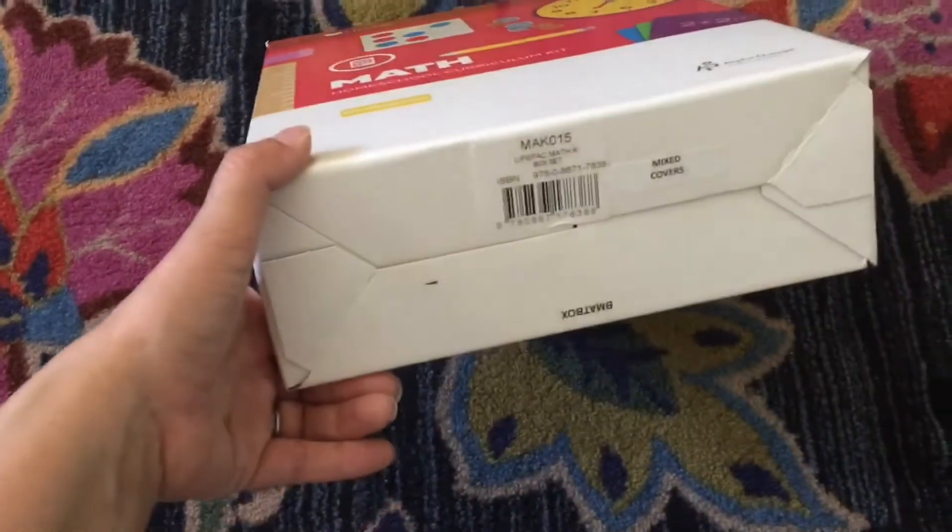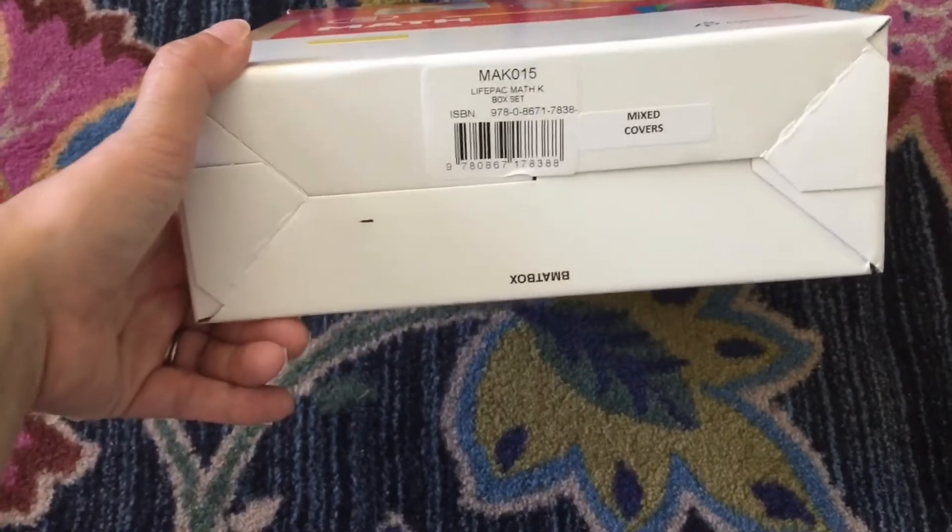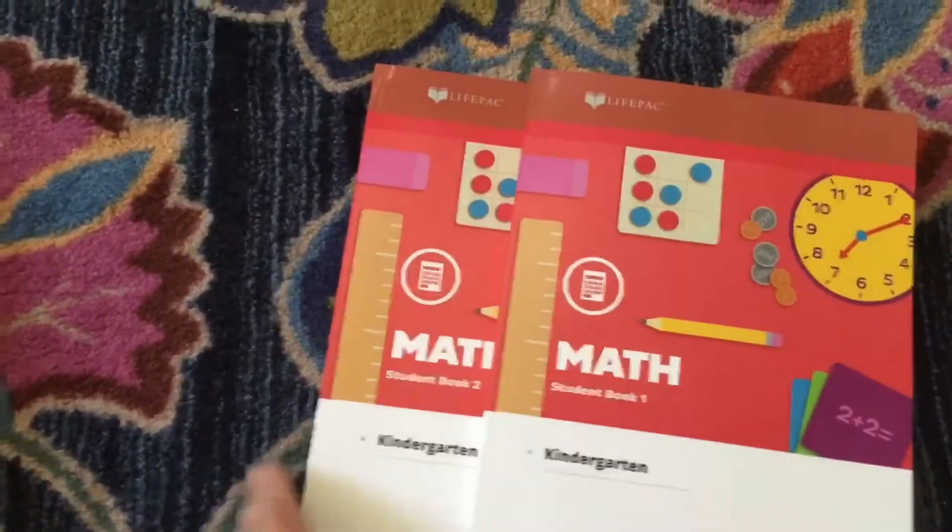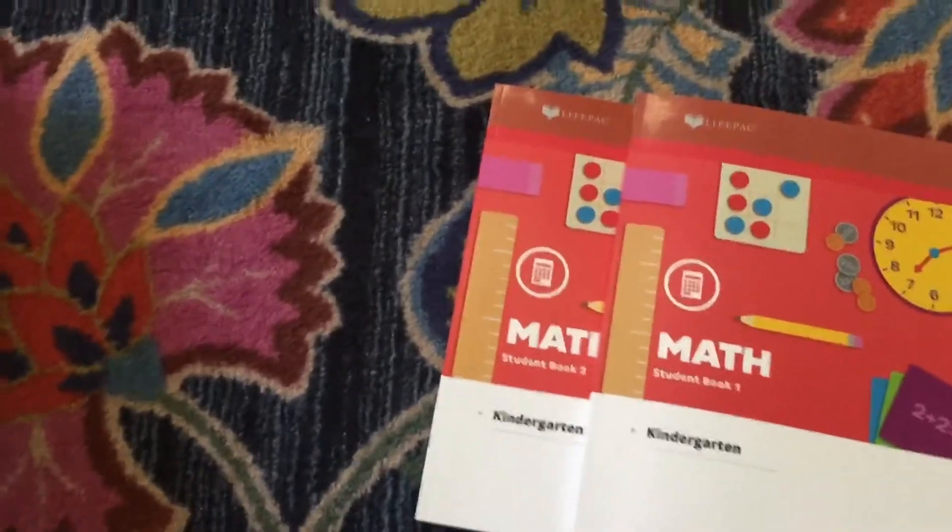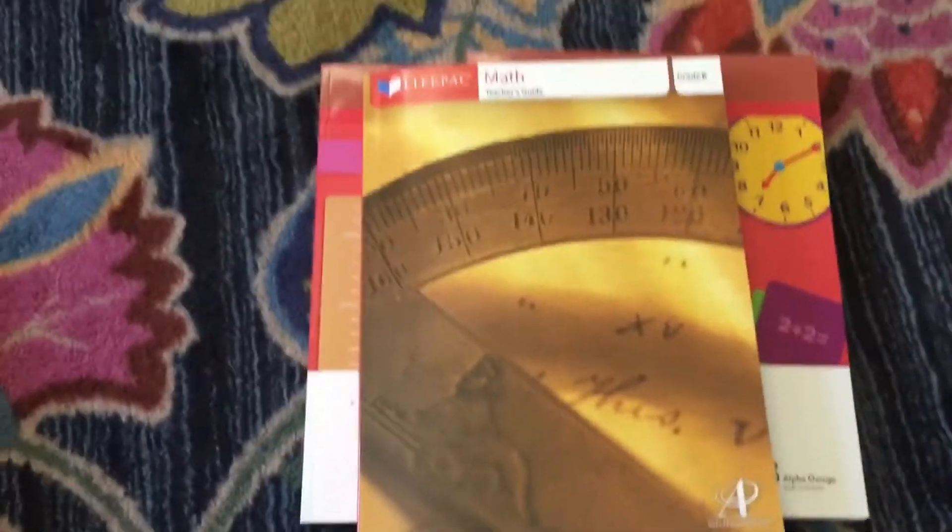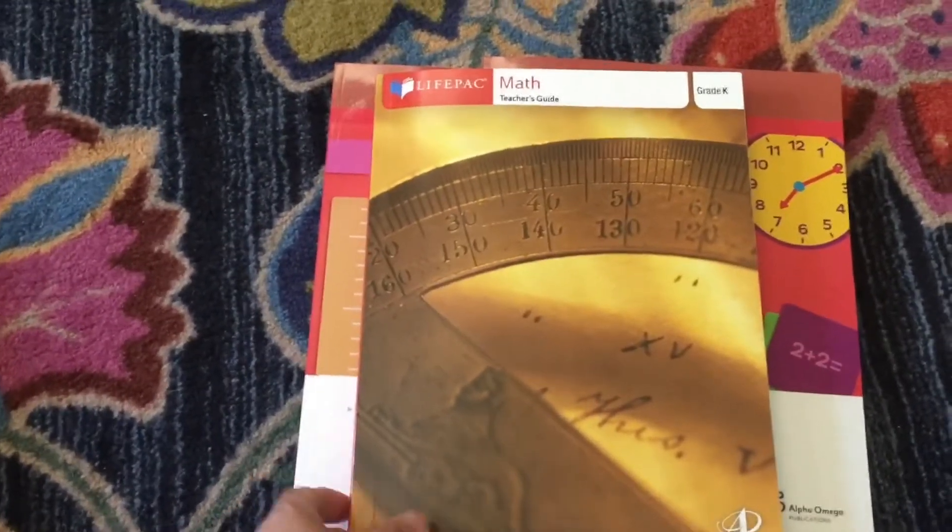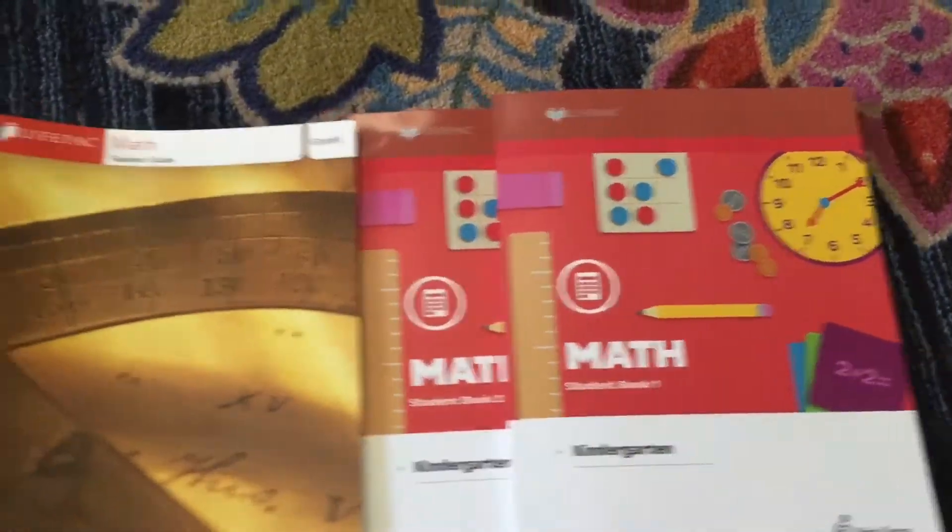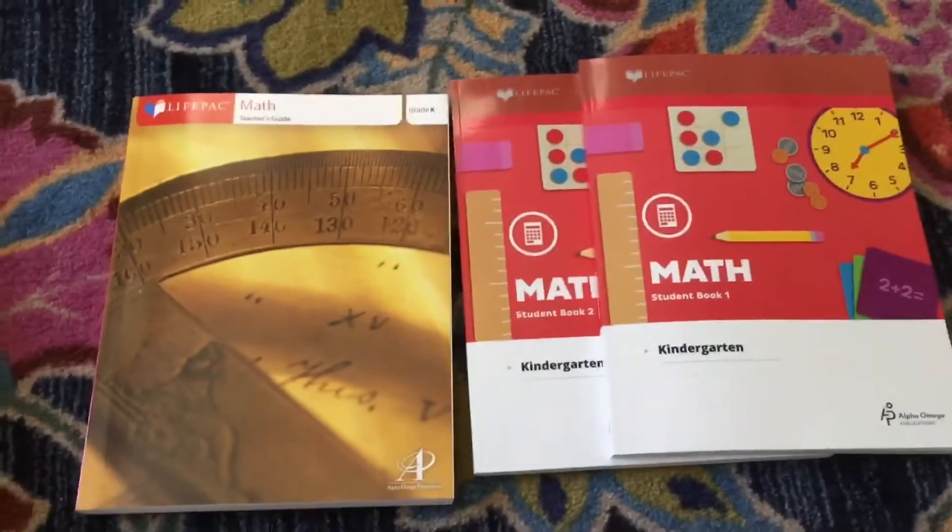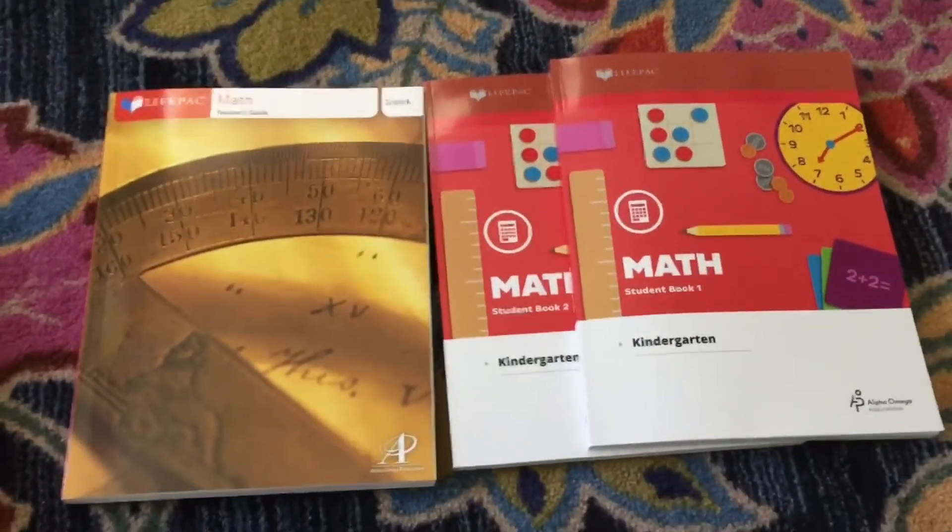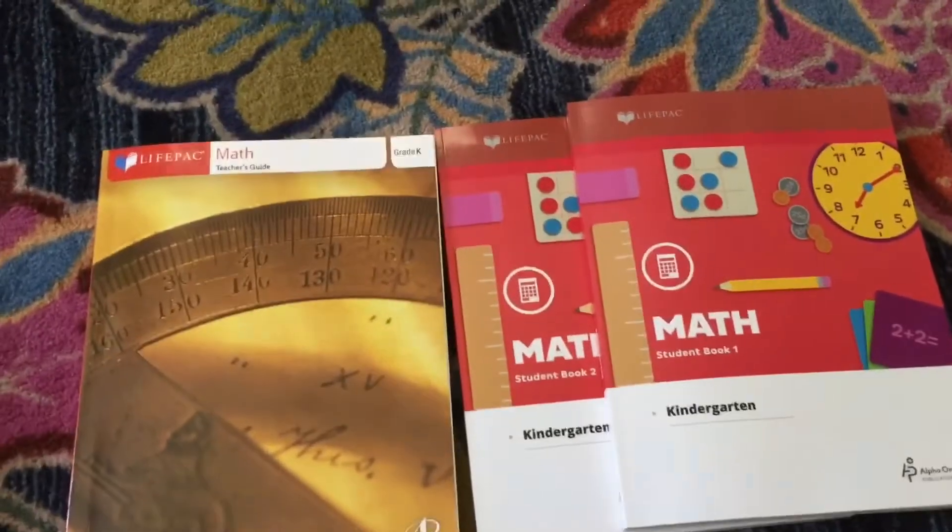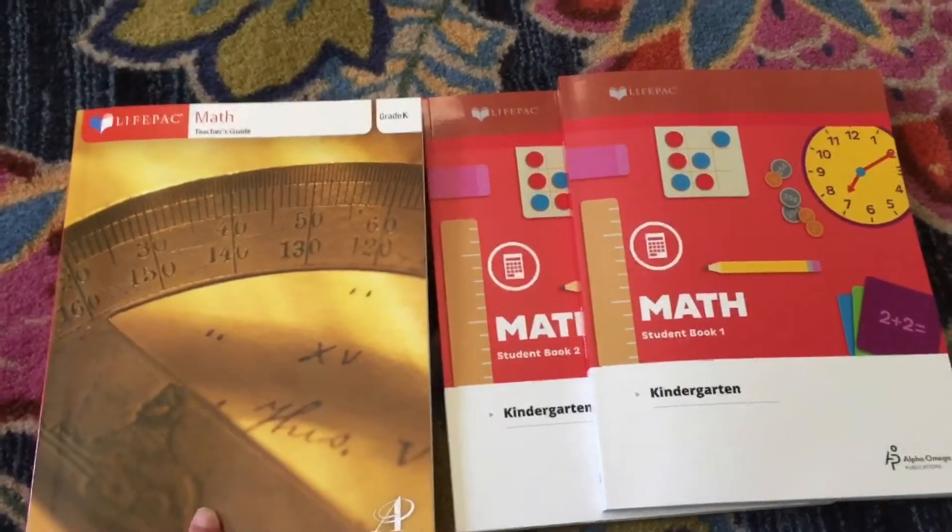My box that I purchased from the publisher states right here that it's mixed cover. I got two of the student workbooks that have the new covers and then the teacher's guide came in the old cover. That's fine with me as long as all the material is there. I think the only problem that someone might have with this is resale value once the new covers come out.